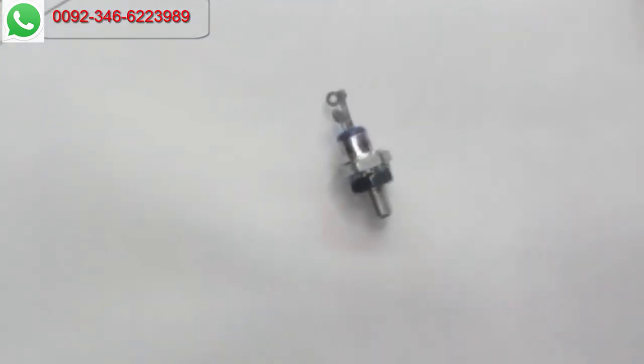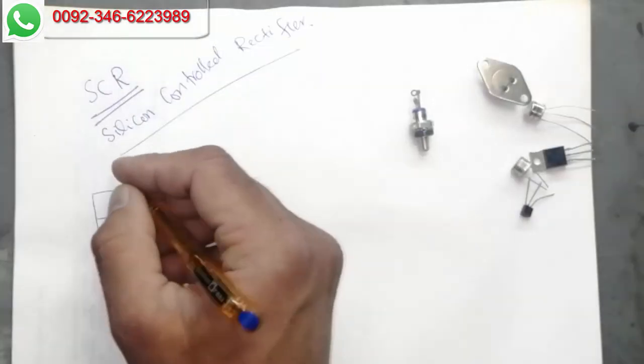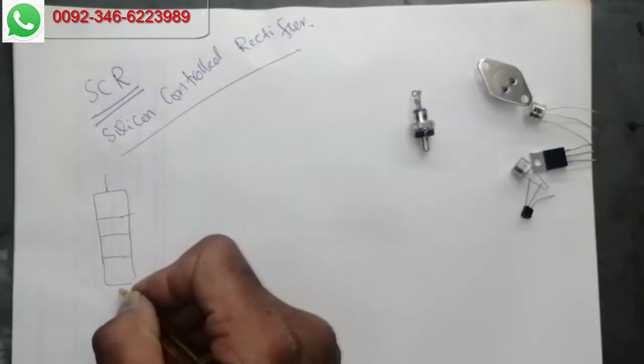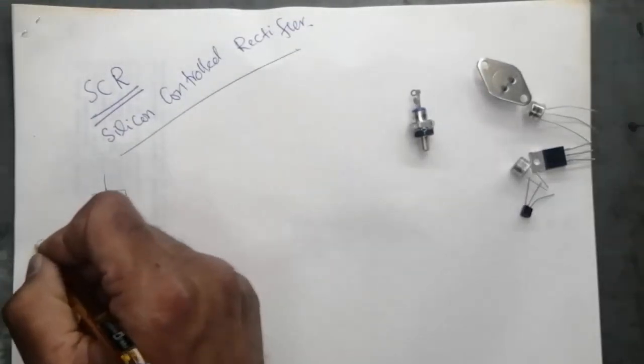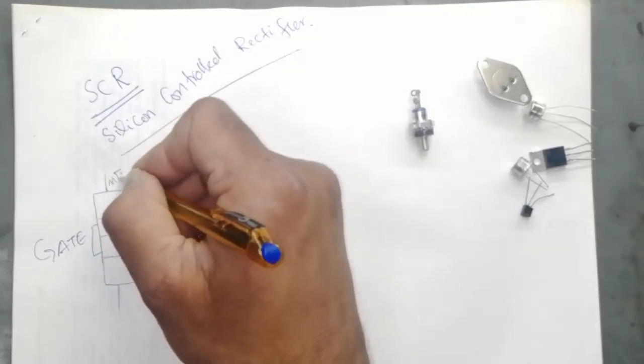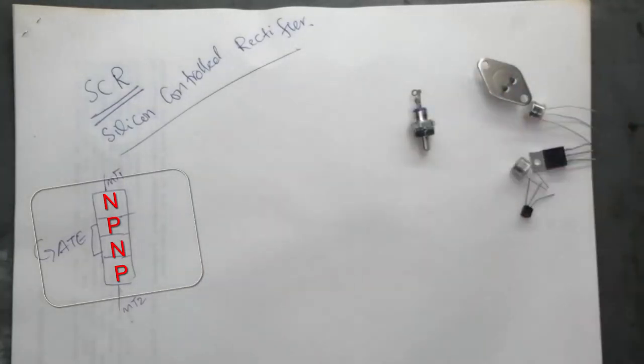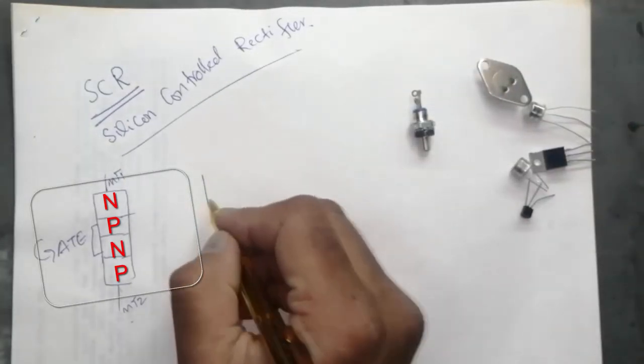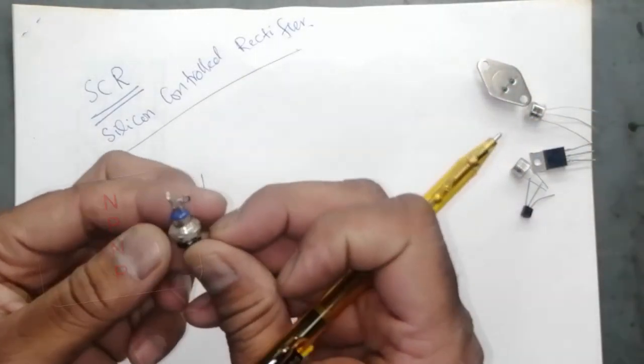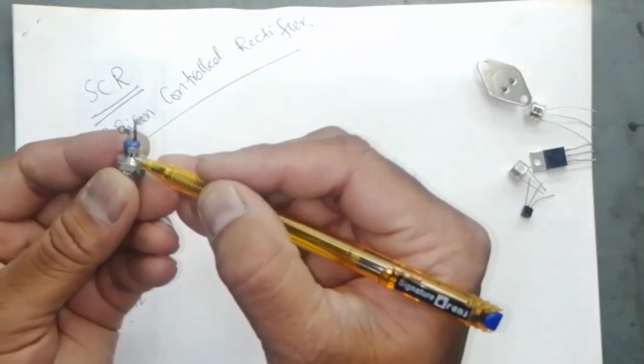Silicon controlled rectifier is basically a four layer semiconductor. It has terminal one, terminal two, and here it is gate. MT1, MT2, or terminal one, terminal two.